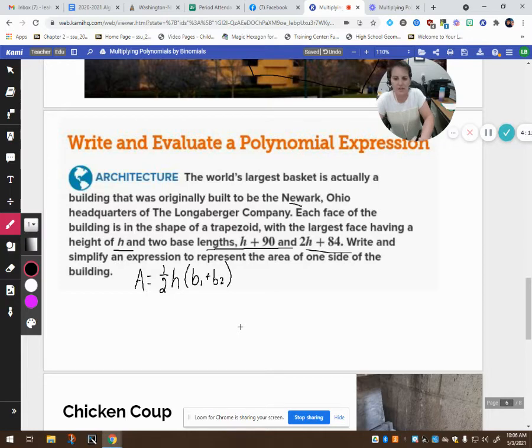So we have one half times our height. Well, it told us our height was H, so we're good there. Times the bases. Well, base one is H plus 90. Base two is 2H plus 84. So we can just fill that in. One half times H times H plus 90 plus 2H plus 84.